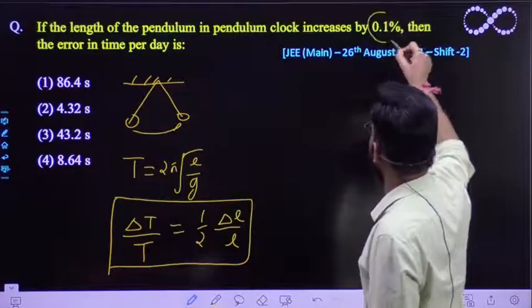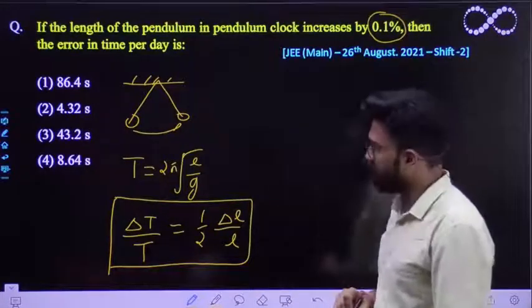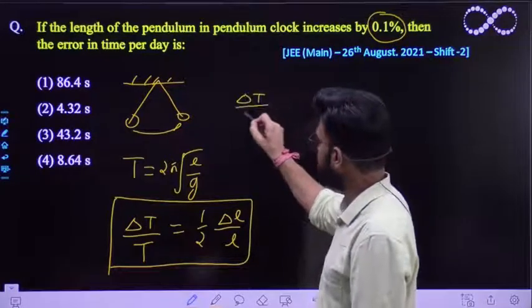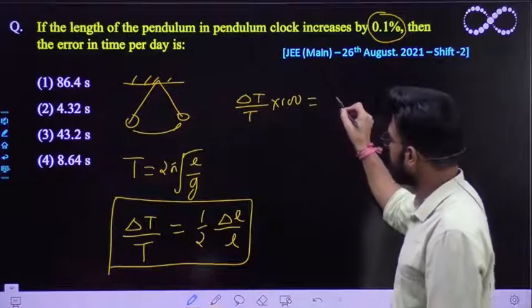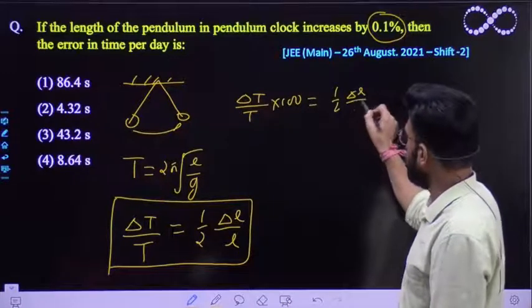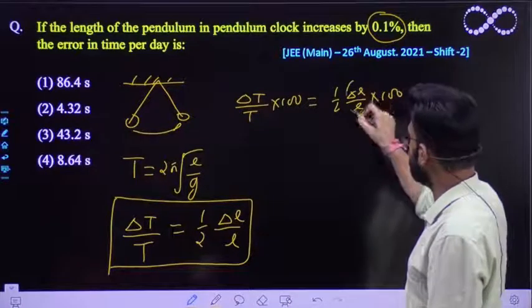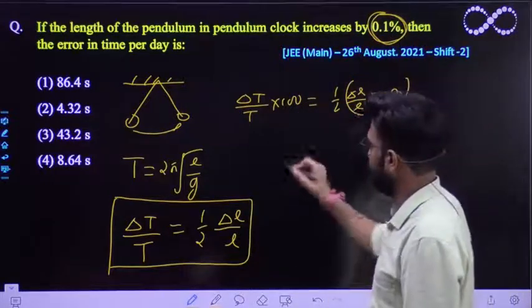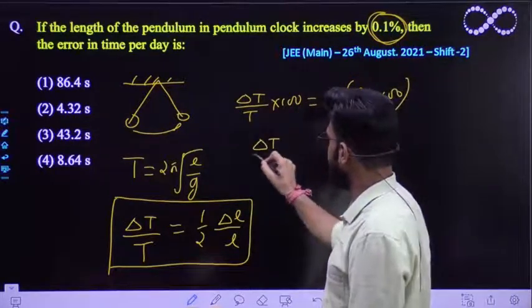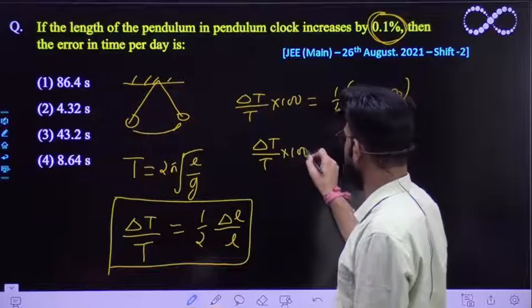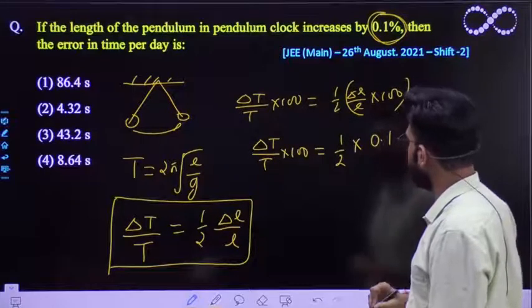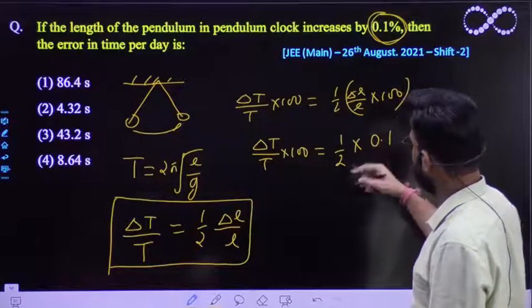Again, what is given to you here is percentage increase in length. So percentage increase in length, this would be equal to percentage increase in time. Must be equal to half del L by L into 100. So this is the expression which is 0.1 which is given to you. So delta T by T into 100 must be equal to half or it must be equal to 0.1. So this is the expression 0.1.